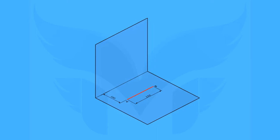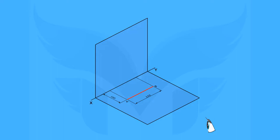Now let's see how the front view and top view of the line will appear. Imagine initially you are standing here and looking in this direction. We take projectors from end A and B till they intersect with the VP. As the line is on the HP, the projectors will intersect with the line XY. Here we get the projections of point A and B and we will name them as A' and B'. Now let's connect A' and B' to get the front view of the line.